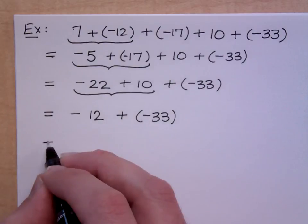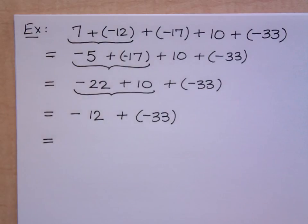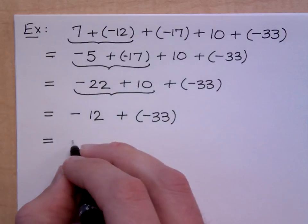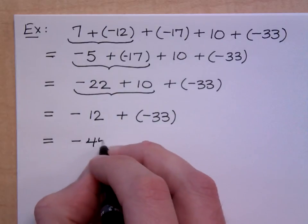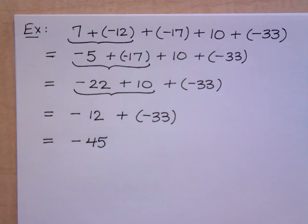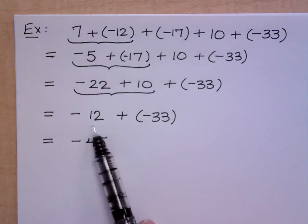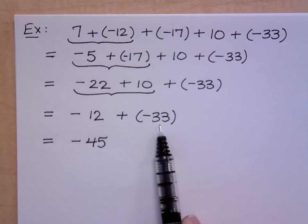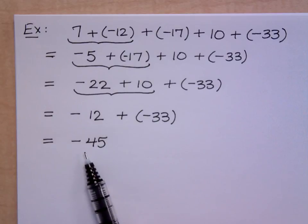And then finally I've got my negative 33 here at the end. And so when you combine these guys, they're both negative. What do you have? Negative what? Negative 45. Do whatever you need to do in your mind. Make those connections to something you can relate to. If I lose $12 and then I lose $33, I've lost $45 altogether, right? Okay.